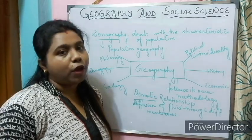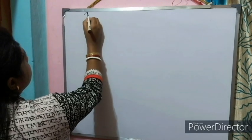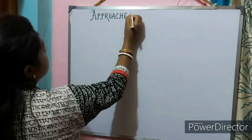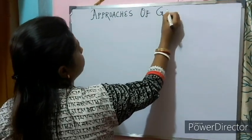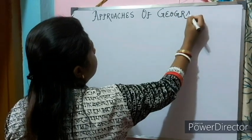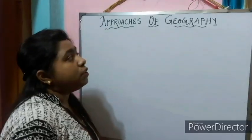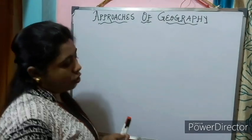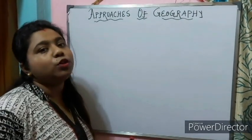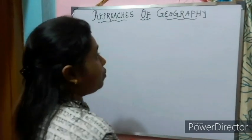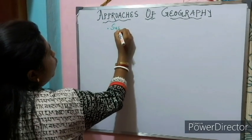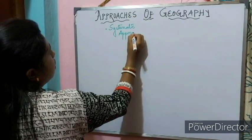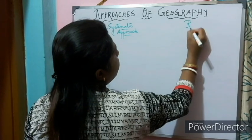Now let us move ahead with a very interesting topic of geography: the approaches of geography. Since geography is an interdisciplinary subject, it is very important to understand the approaches through which we can understand geography. The two approaches we will study are the systematic approach and the regional approach.